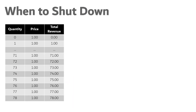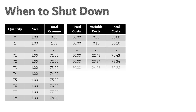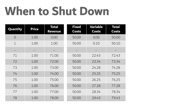Let's look at our bread baking business again using the same numbers from the last video. We're able to sell every loaf of bread we make for one dollar, which makes total revenue very easy to compute — zero loaves earns zero dollars, one loaf earns one dollar, 71 loaves earns $71, and so on. We have fixed costs of $50 per day. Then we have the variable costs: the marginal cost of the first loaf was 10 cents, so the total variable cost of one loaf is 10 cents; the second also had a marginal cost of 10 cents, making the variable cost for two loaves 20 cents total, then 30 cents, 40 cents, and so on.